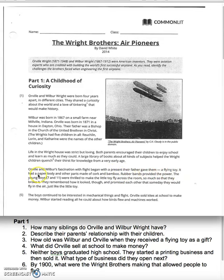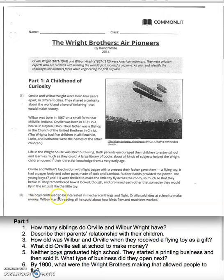Orville and Wilbur's fascination with flight began with a present their father gave them — a flying toy. It had a paper body and other parts made of cork and bamboo. Rubber bands provided the power. The young boys, ages 7 and 11, were thrilled to make the little toy fly across the room — so much so that they broke it. They remembered how it looked and promised each other that someday they would fly in the air, just like the little toy. The boys continued to be interested in mechanical things and flight. Orville sold kites at school to make money. Wilbur started reading all he could about how birds flew and machines worked.